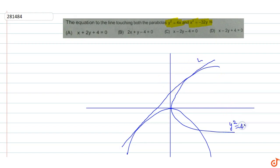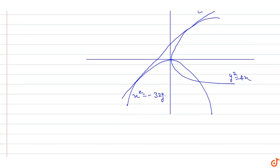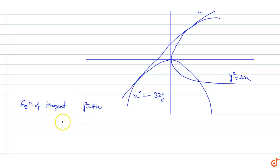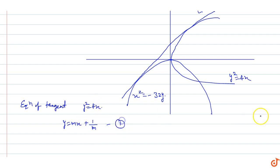The equation of tangent to the parabola y² = 4x is given by y = mx + a/m, where a = 1, so it becomes y = mx + 1/m. This is equation one.